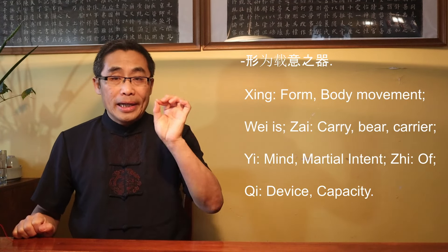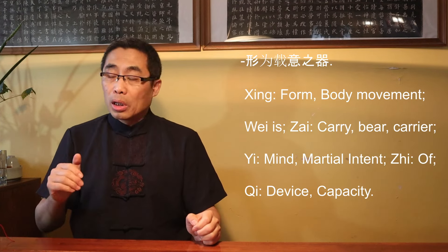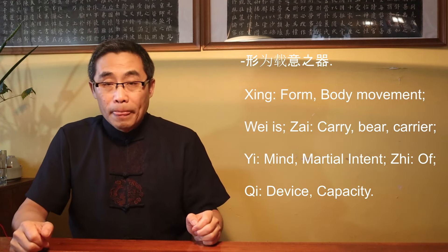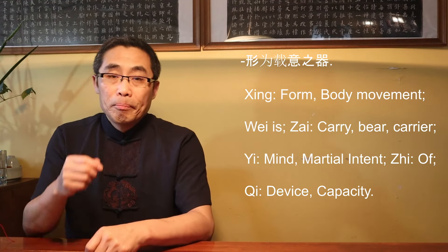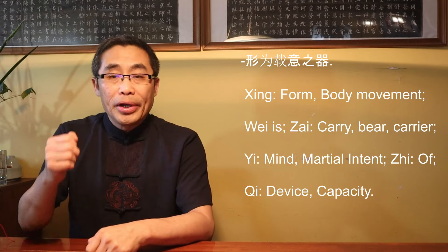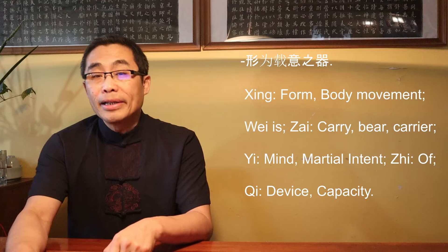This proverb has three parts. I'd like to translate them one by one. The first part, 行为宰意之气, 行 means form or body movement, 位 means is, zai means carry, bear or just a carrier, yi means mind or martial intent,